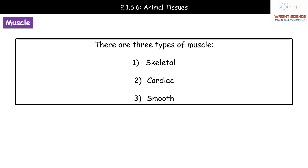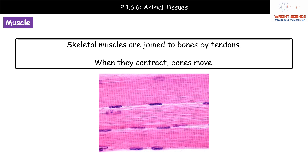There are three types of muscle: skeletal, cardiac and smooth. Skeletal muscles are joined to the bones by tendons. When we contract skeletal muscle, it pulls on the tendon, which pulls on the bone, causing movement. Under the light microscope, skeletal muscle shows a very distinctive striped pattern.